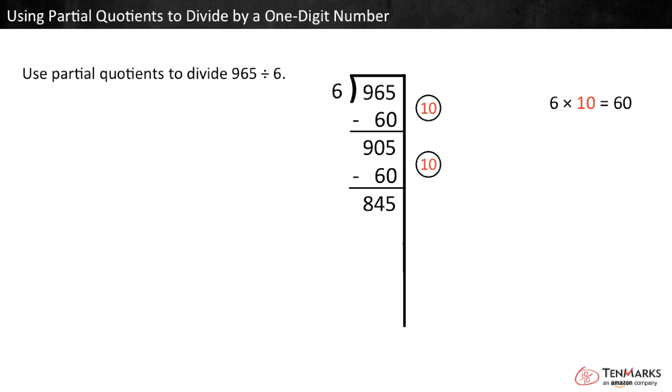You can see that 60 will fit into what is left over again, but this is going to take a while if we keep subtracting only 60 at a time. Can you think of a number that is greater than 60 that will fit into 845? We know that 6 times 100 is 600, and 600 is less than 845, so there are at least 100 more groups of 6 here. Write 100 to the right, then subtract 600.